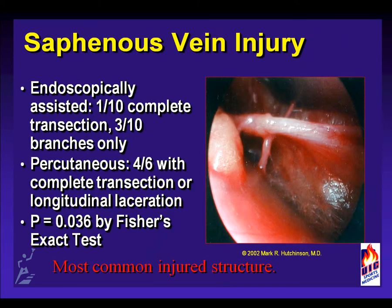Regarding the release of the medial structures and deep posterior compartments, endoscopically assisted fascial releases were associated with saphenous vein injury — complete transection in one out of ten patients, and three out of the remaining ten had injuries to significant branches of the saphenous vein — compared to the percutaneous technique in which 67% of the legs sustained a complete transection or longitudinal laceration. These findings suggest that the saphenous vein is the most commonly injured structure for approach to the medial aspect, and have discouraged us from performing any endoscopic or percutaneous releases of the deep posterior and superficial posterior compartments. If we are required to release these areas, they are done under a much wider exposure to avoid injury to these structures.